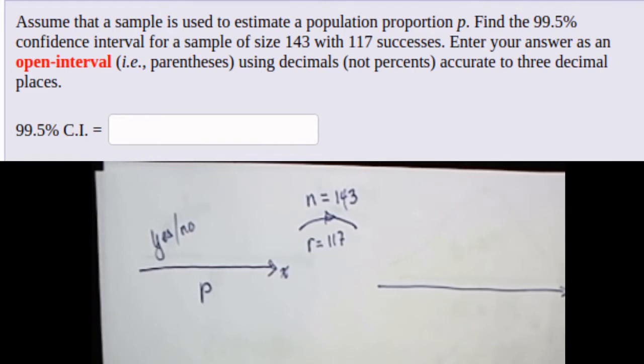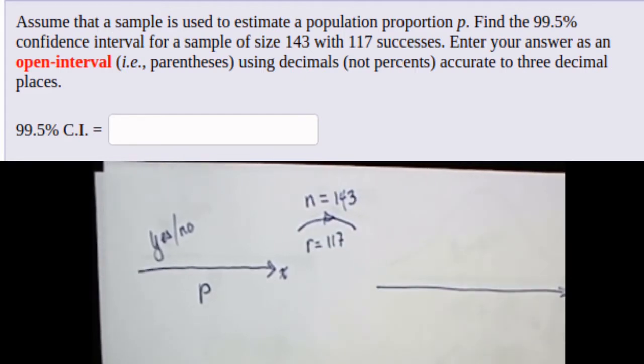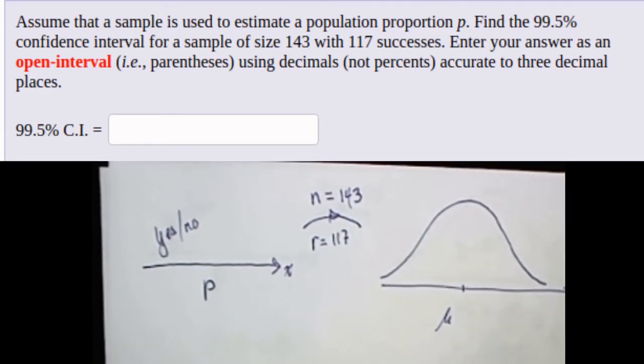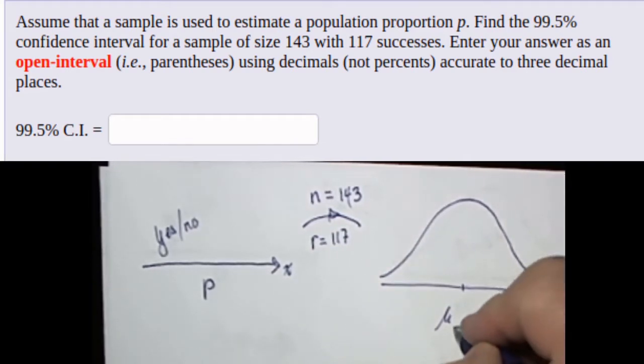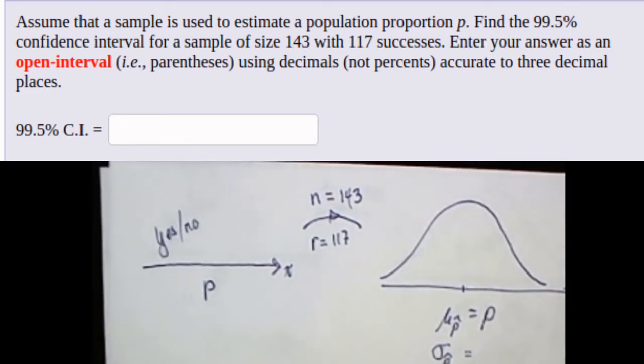So we're interested in the distribution of all the sample proportions of samples of size 143. We know that the distribution of those sample proportions is normally distributed with the mean equal to the original probability of success and the standard deviation of this distribution of sample proportions is equal to the square root of p times q divided by n.